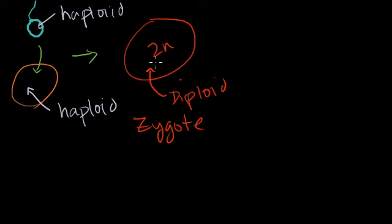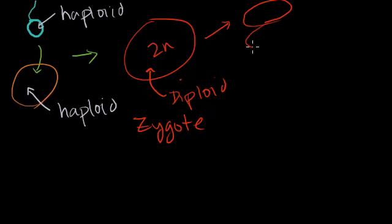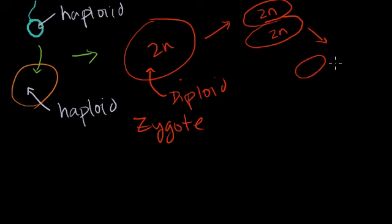Immediately after fertilization, this zygote starts experiencing cleavage. The mechanism is mitosis, but it doesn't increase a lot in size. This one will split into two, and those will split into four. Each of these are all 2n and have the same exact genetic complement as that first zygote. And it keeps splitting.